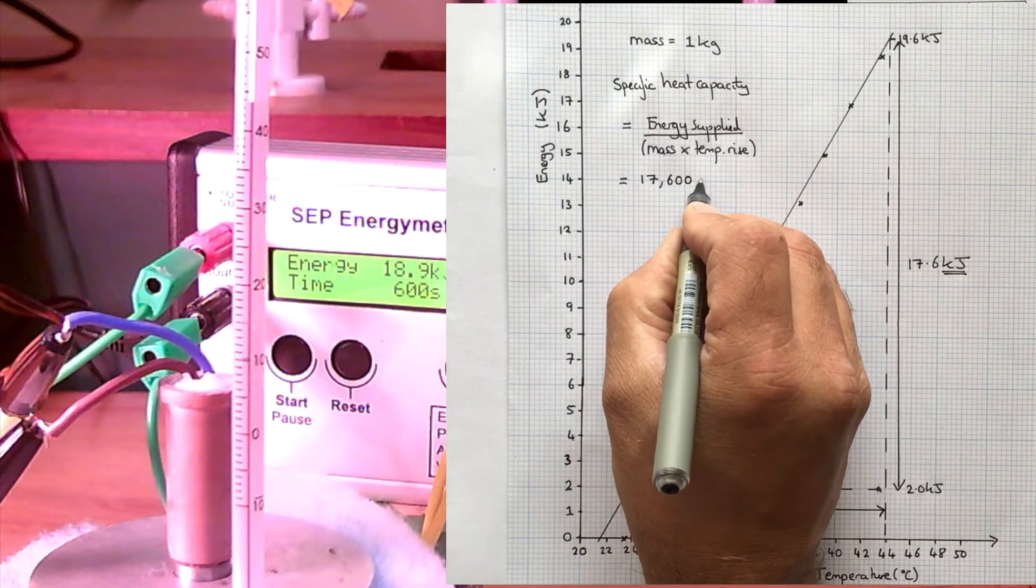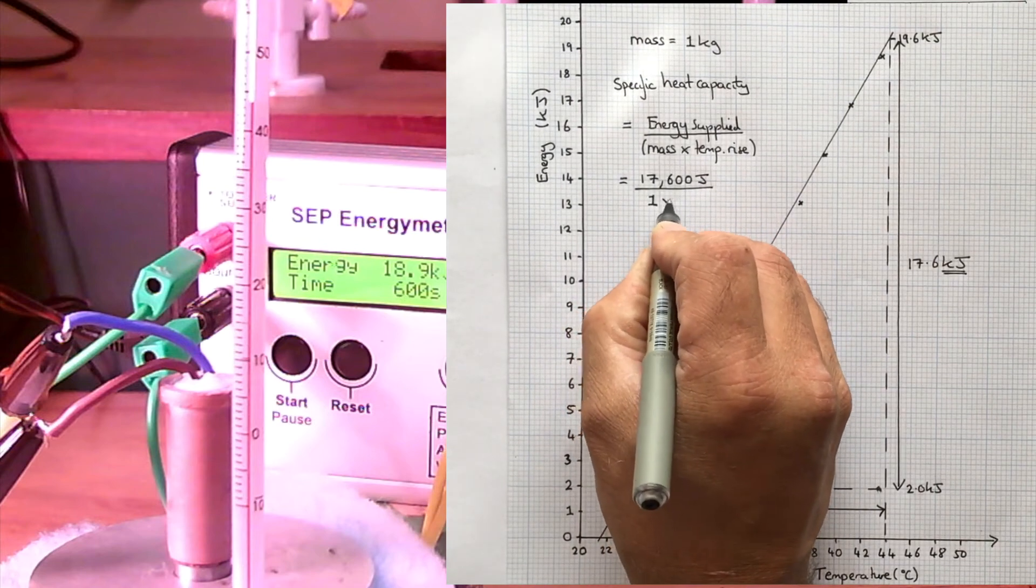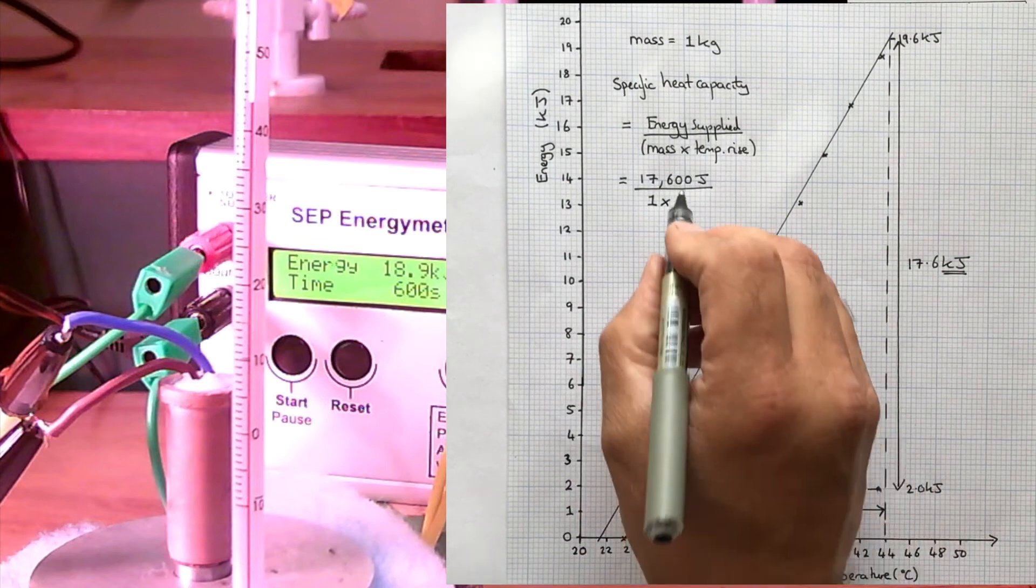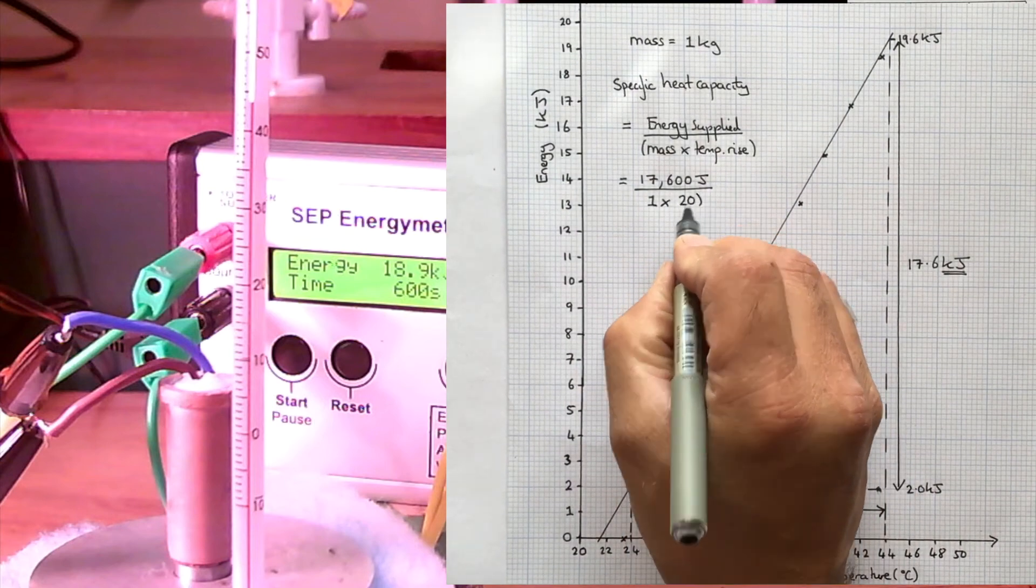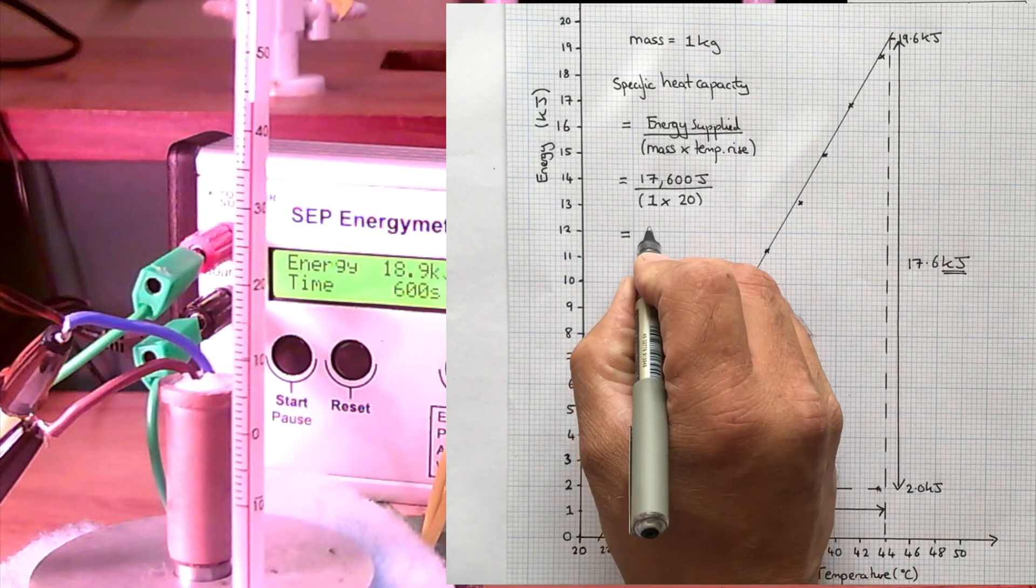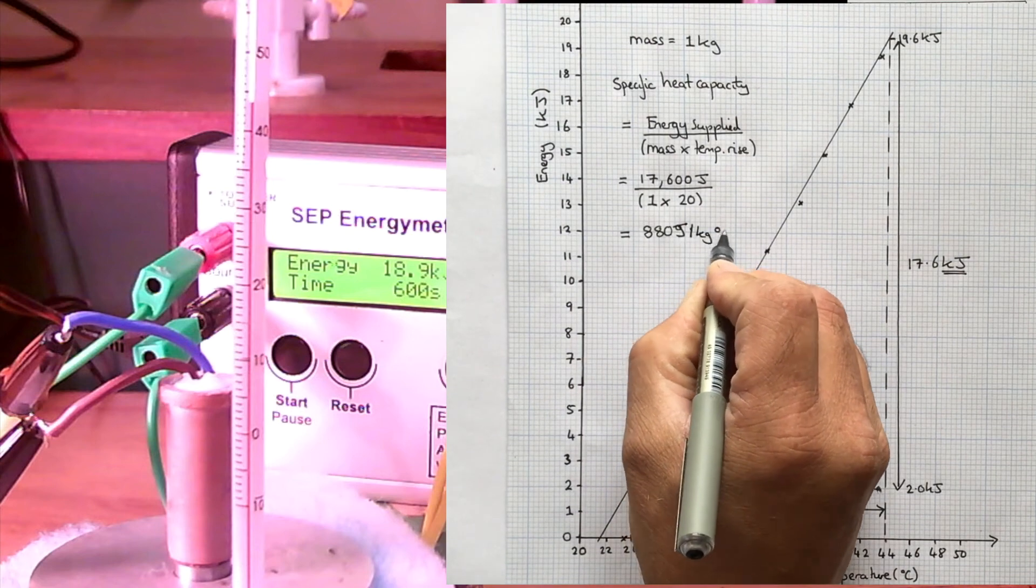So specific heat capacity is energy supplied, which was 17,600 joules, divided by the mass, which was 1 kilogram, times by the temperature rise, which was 20 degrees. So that gives us a specific heat capacity of 880 joules per kilogram degree C for aluminum.